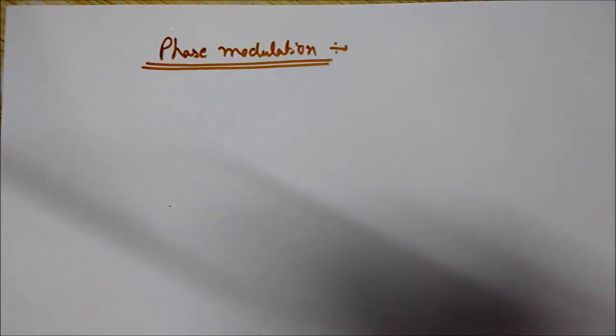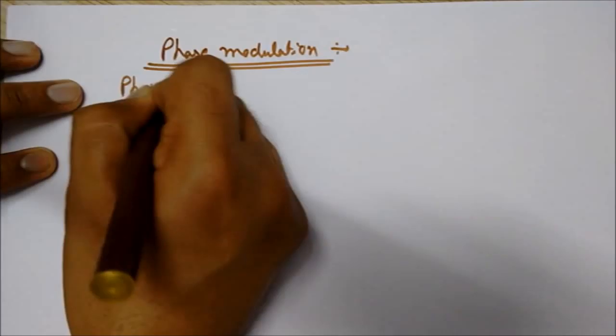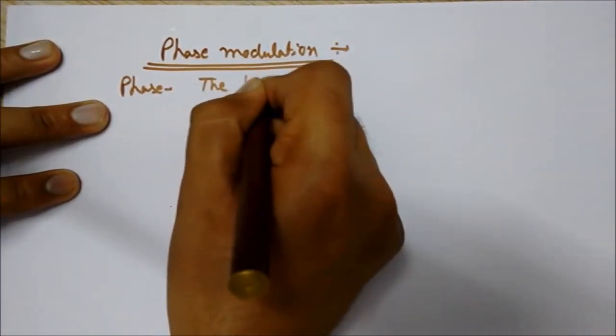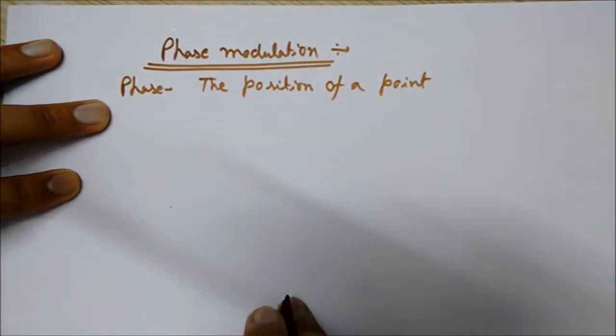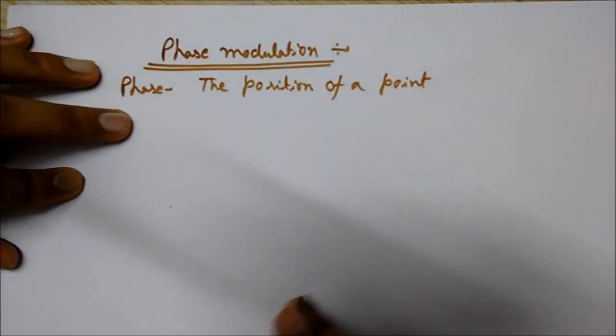Phase is the position of a point at some time instant. Phase is the position of a point at some time instant.